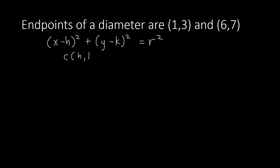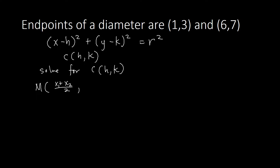Here, h and k represent the center and r is the radius. To find the center and r squared, we first need to look for the center. We will utilize the midpoint formula, because the center is at the middle of the diameter. Since the diameter passes through the center, the midpoint of the diameter is also the center of the circle.